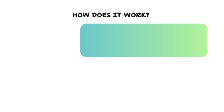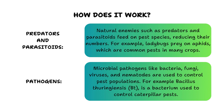Biological control operates through various mechanisms, primarily involving predators, parasitoids, pathogens, biopesticides, natural enemies, conservation of natural enemies, and augmentation. Predators and parasitoids directly consume or parasitize pest species, thereby reducing their populations. An example is ladybugs, which prey on aphids and other common pests in many crops.